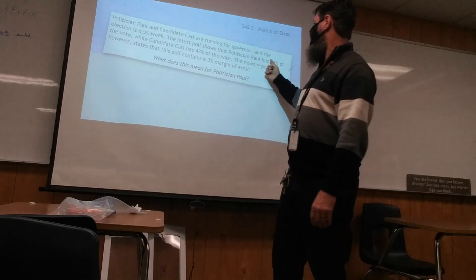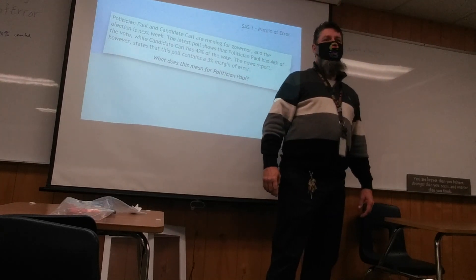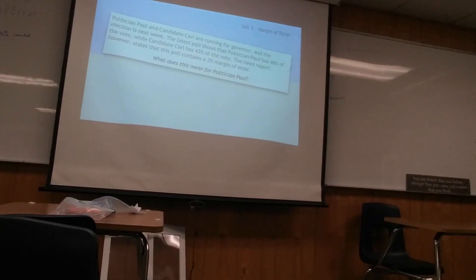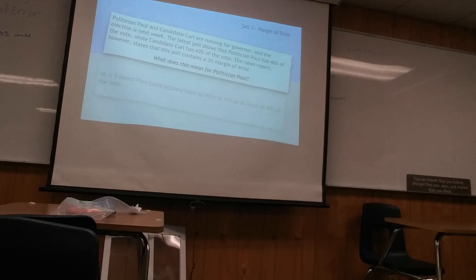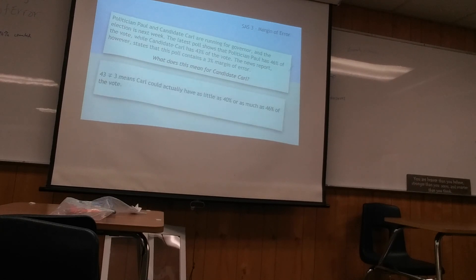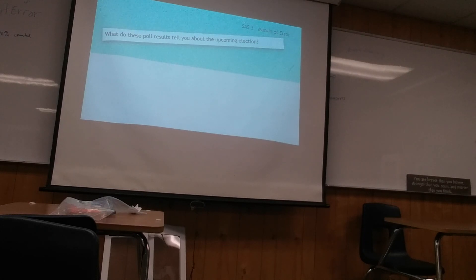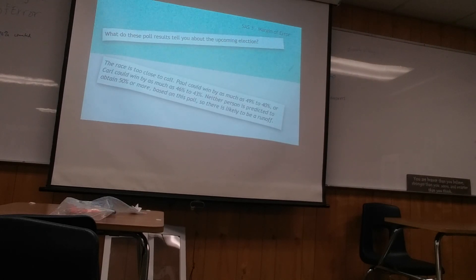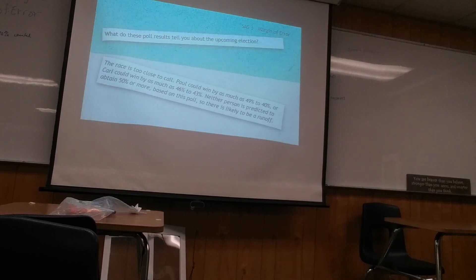Three points would be added to Candidate Karl and three points taken away from Politician Paul, making it possible for Karl to win. Paul could actually have as little as 43% or as much as 49% of the vote. Neither candidate is predicted to obtain 50% or more based on this poll, so there is likely to be a runoff. This is unlike presidential races. Margin of error is very important to understand when analyzing election results.